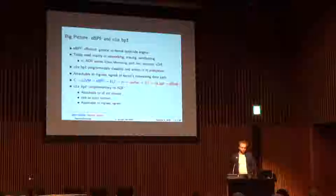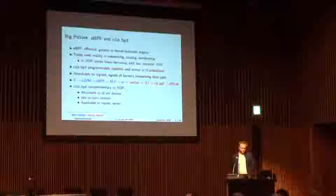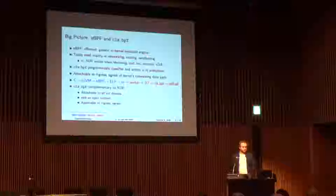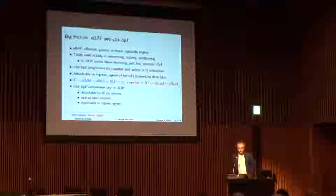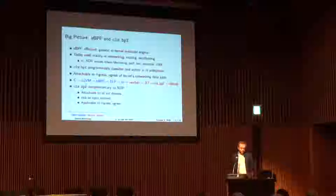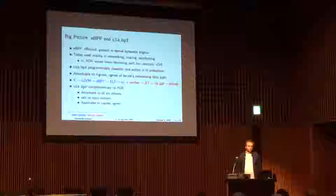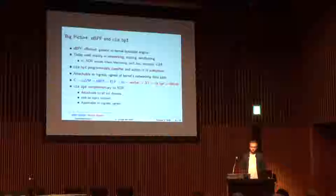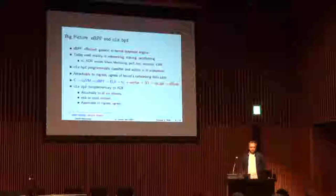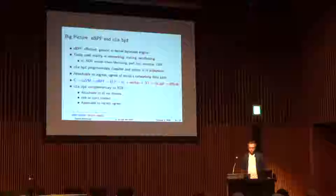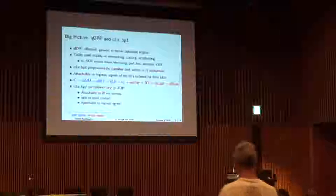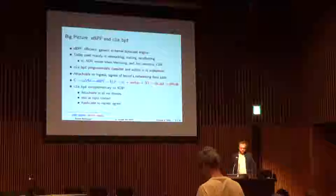In networking, the two main users are TC and XDP, which is evolving. We have it in socket filters — we saw yesterday the talk on Suricata — and we have it in STREUS port where we can do demuxing.